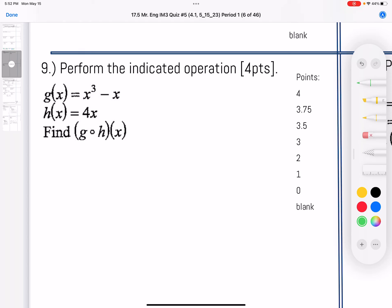Alright, question number 9 says perform the indicated operation. This is saying g of h.